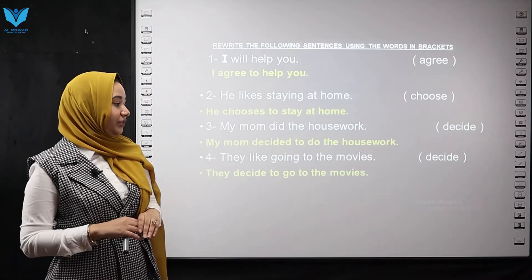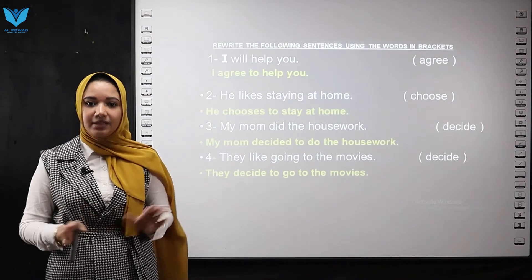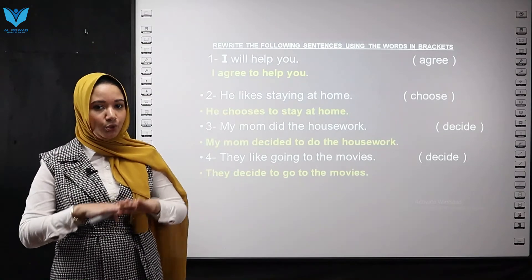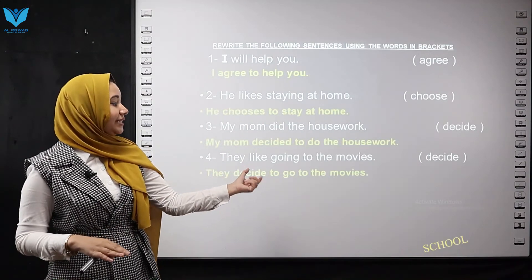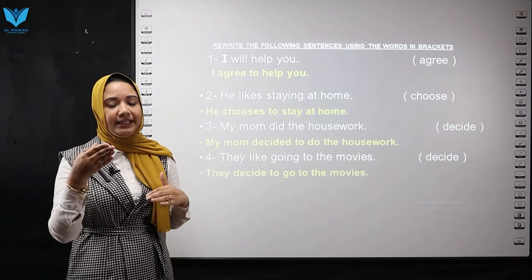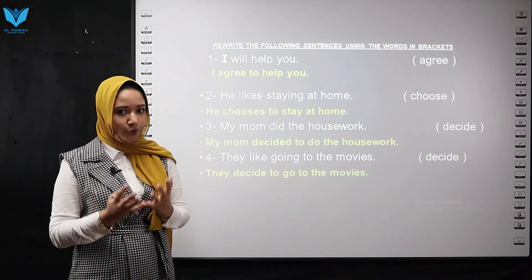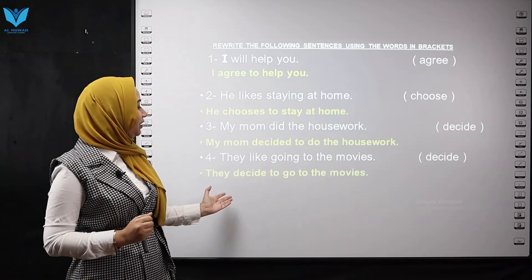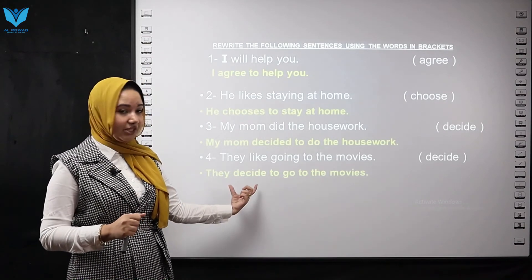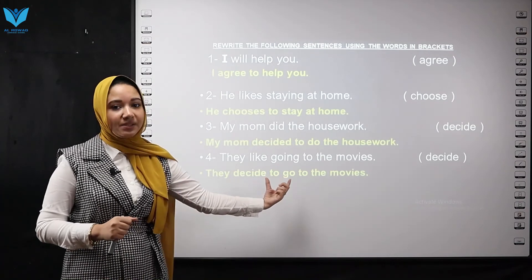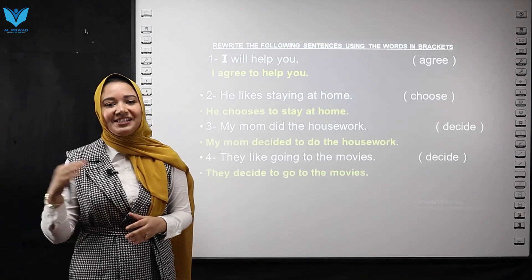Number four: They like going to the movies — use 'decide.' After 'decide,' we put 'to' plus the base form. The main verb is 'go.' I remove 'like' and '-ing.' The answer is: They decide to go to the movies. Decide — 'to' plus base form — this is an infinitive. Thank you for watching, and see you next time!